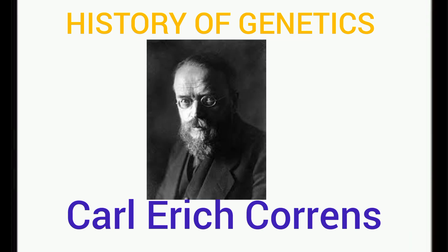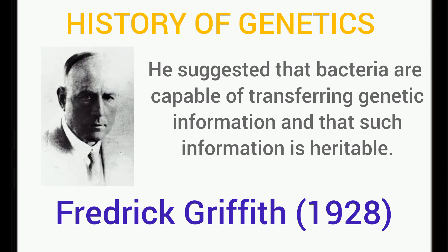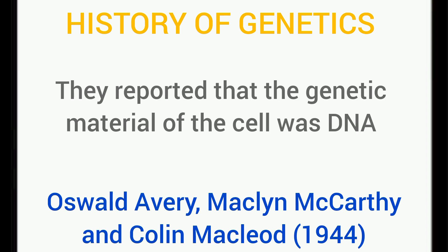Carl Correns, De Vries, and Von Tschermak were the three scientists who rediscovered Mendel's work in the 1900s. Frederick Griffith suggested that bacteria are capable of transferring genetic information, and those bacteria were used as molecular vehicles known as vectors to transfer genes from one species to another. Harriet Creighton and Barbara McClintock were the ones to suggest that chromosomes form the basis of genetics. Chromosomes are DNA wound around histone proteins, so we can say that DNA plus histone proteins are chromosomes.